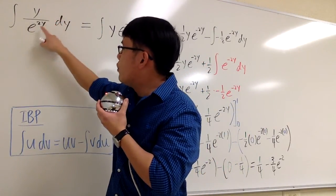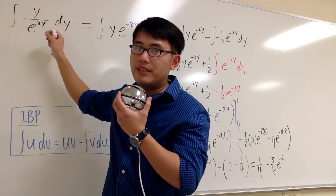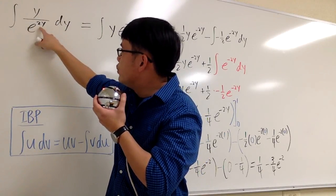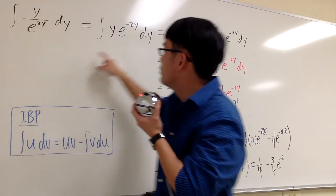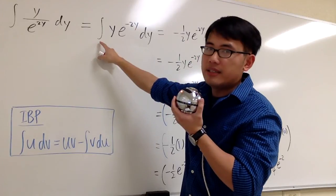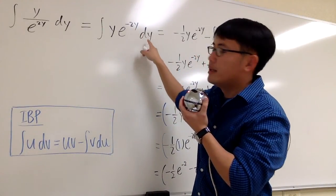Let's see how we can integrate y over e to the 2y. This is a fraction. It's kind of intimidating, but it's not that bad, because we can change e to the 2y on the denominator into e to the negative 2y. And here, we can look at the original integral as y times e to the negative 2y dy.